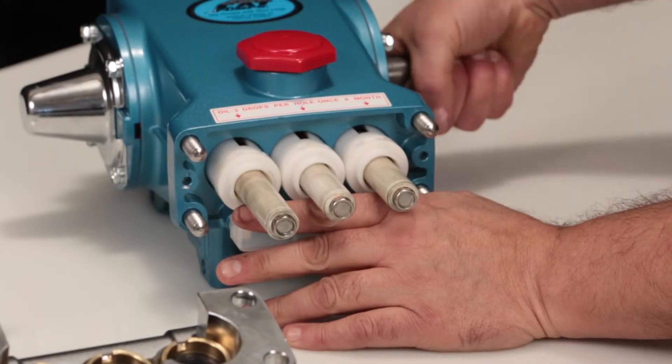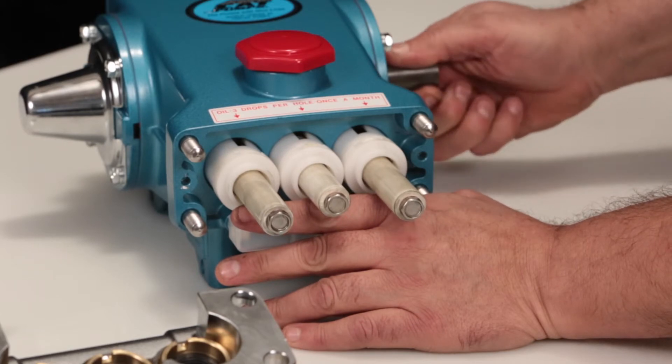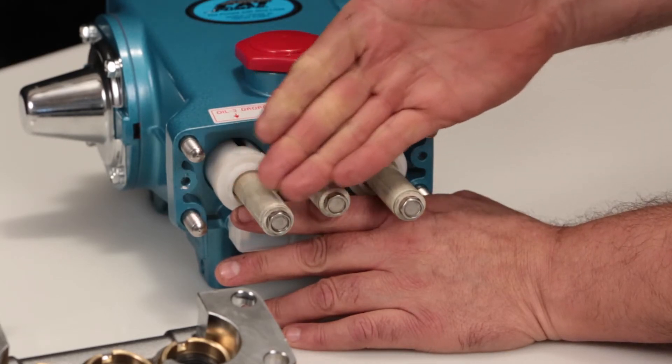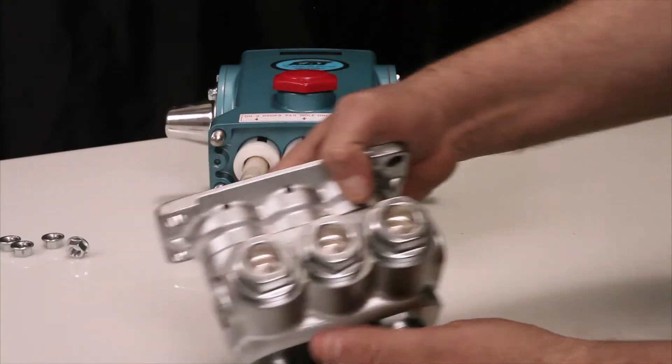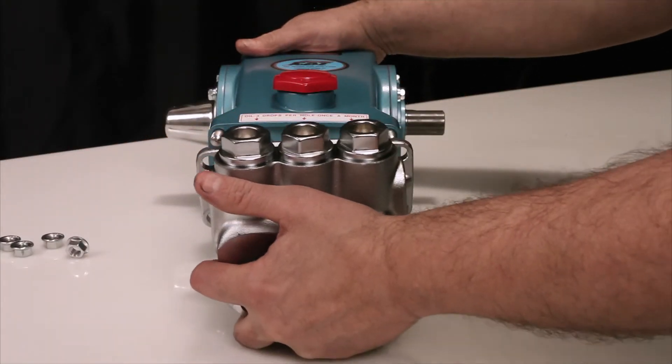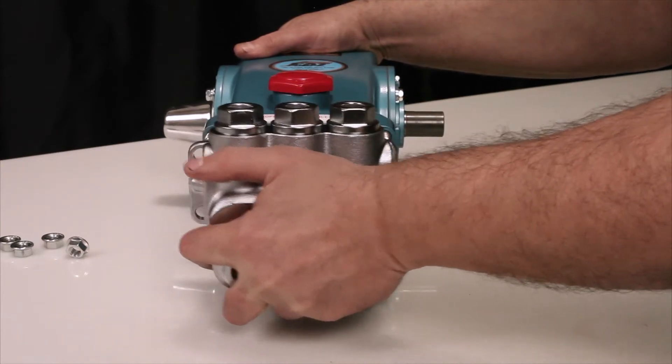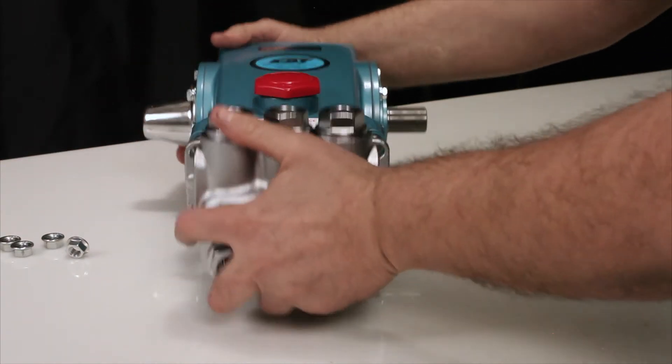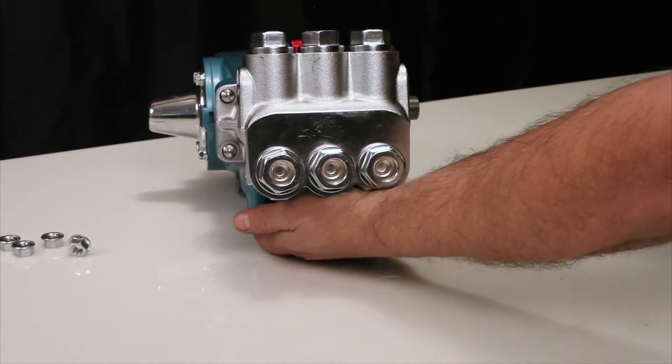Before reinstalling the manifold, rotate the crankshaft so the outside two plungers are even at the furthest distance from the crankcase. Install the manifold by hand, ensuring even alignment. Finish installing using a rubber hammer to ensure the manifold is flush to the crankcase surface.